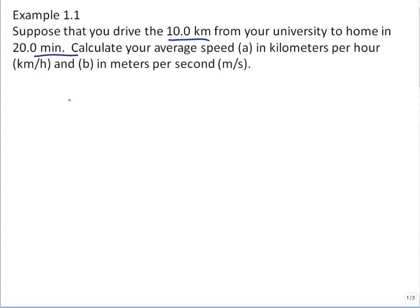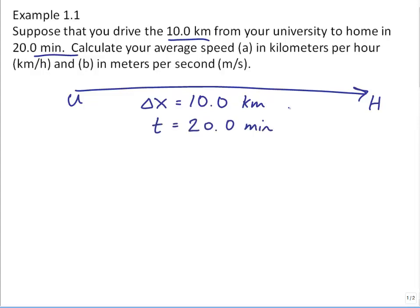Just a quick diagram. U for university, H for home. We might as well call the distance delta x, since we'll do that in chapter 2, is 10.0 kilometers. And the time is 20.0 minutes.